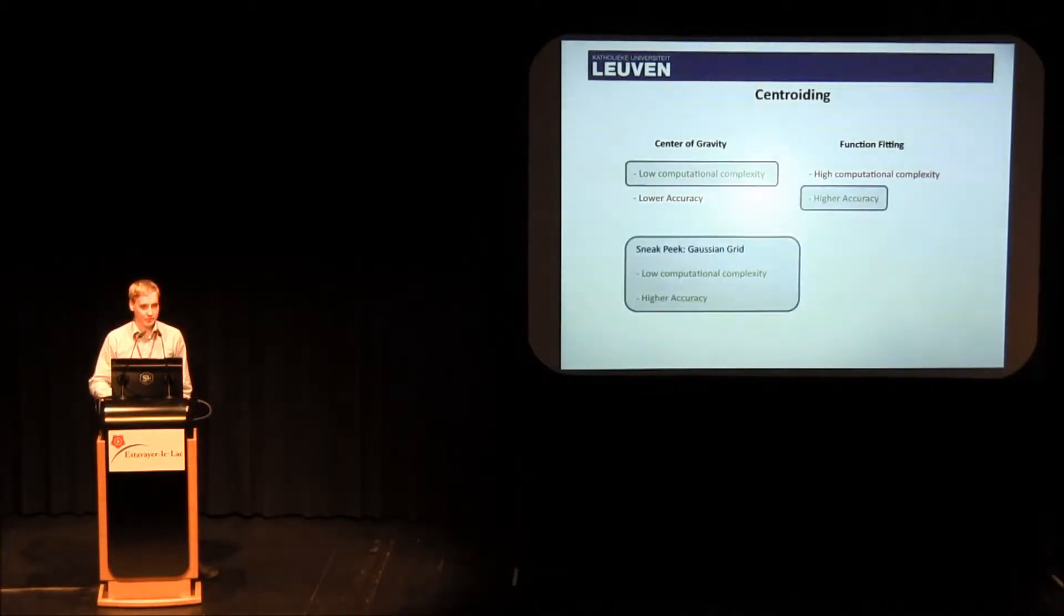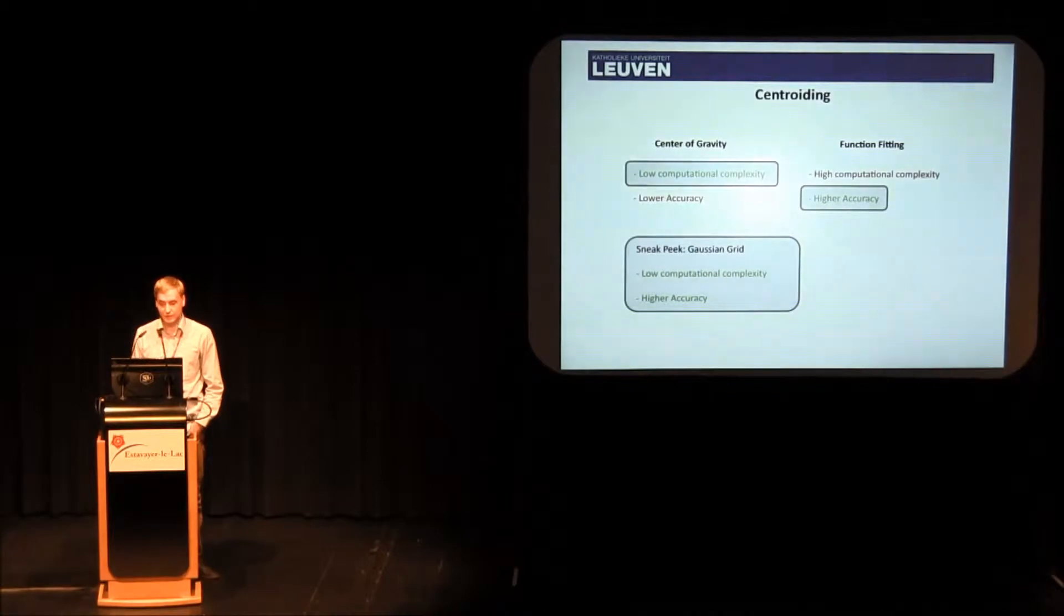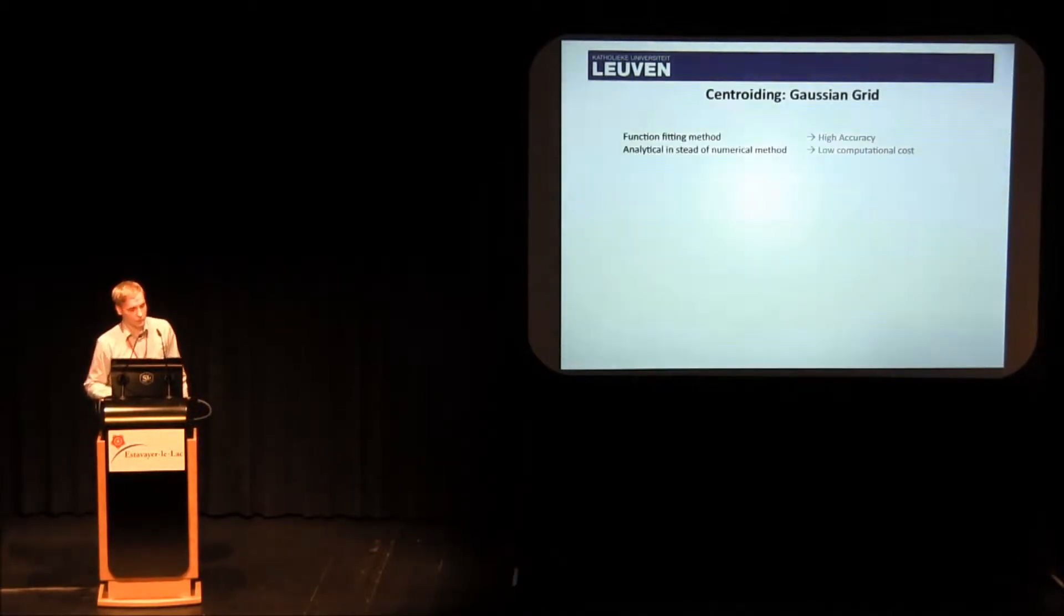You have two ways to determine the centroids, two classical ways in which it is done. You can have a center of gravity method, which is quite fast because it's a very easy calculation, but it has lower accuracy. On the other hand, you can fit the Gaussian function through it, take the centroid at the center of the Gaussian, and you will have higher accuracy.